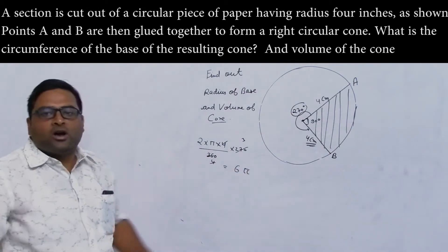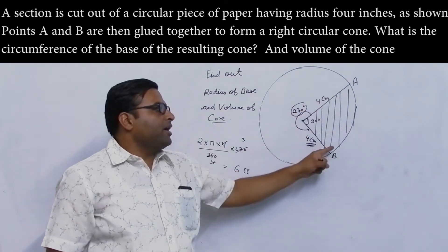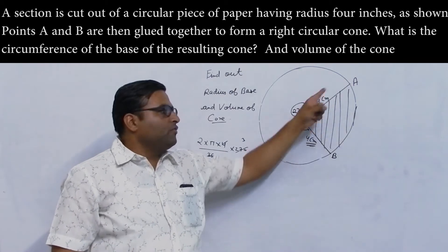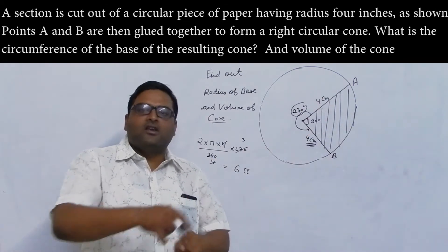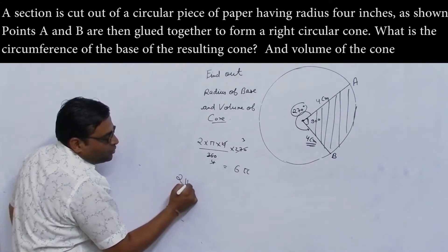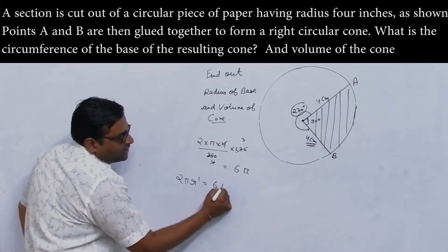Now the base - when A and B are glued together, what happens here? The arc becomes the base circumference, which is 2πr'. It equals 6π.